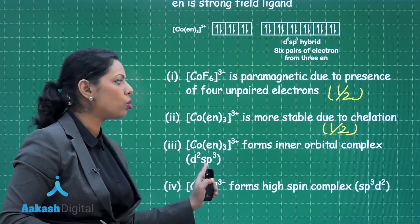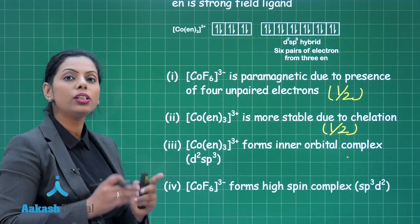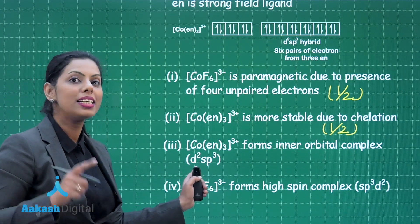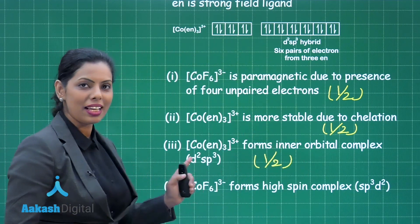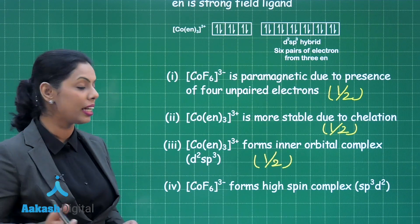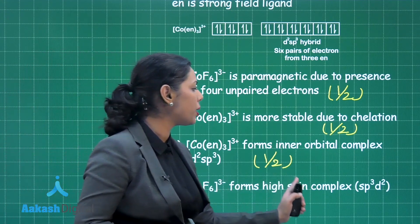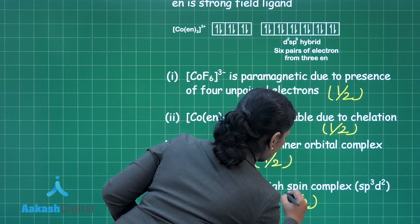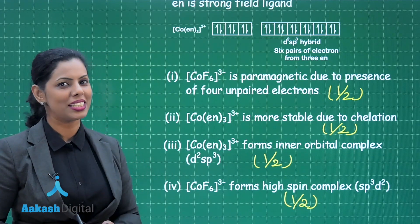To summarize: [CoF₆]³⁻ is paramagnetic due to 4 unpaired electrons (half mark). [Co(en)₃]³⁺ is more stable due to chelation (half mark). [Co(en)₃]³⁺ is the inner orbital complex with d²sp³ hybridization, while [CoF₆]³⁻ is the outer orbital complex (half mark). [CoF₆]³⁻ is the high spin complex due to more unpaired electrons (half mark). Total 2 marks for question 11.